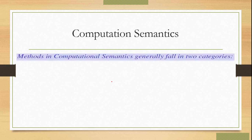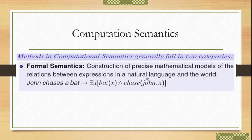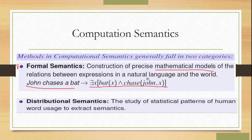The computational semantics is the study of how to automate the process of constructing and reasoning about meaning representations of natural language expressions. So here we have to find out how to automate the process of constructing and reasoning of meaning. There are two basic categories in computational semantics. The first one is called formal semantics, where there is a predefined mathematical model of the relation between expressions in natural language and the world.